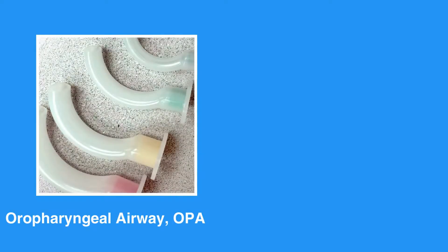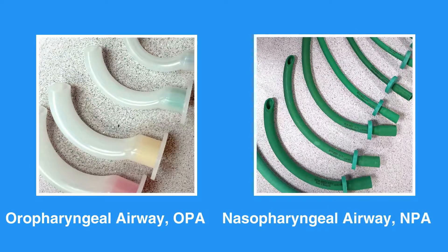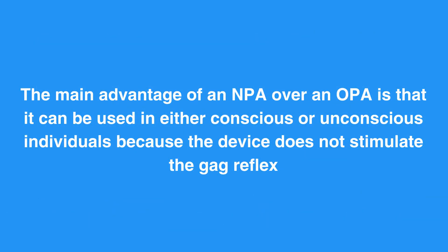Basic airway equipment includes the oropharyngeal airway, or OPA, and the nasopharyngeal airway, or NPA. The primary difference between an OPA and an NPA is that an OPA is placed in the mouth while an NPA is inserted through the nose. Both airway devices terminate in the pharynx. The main advantage of an NPA over an OPA is that it can be used in either conscious or unconscious individuals because the device does not stimulate the gag reflex.